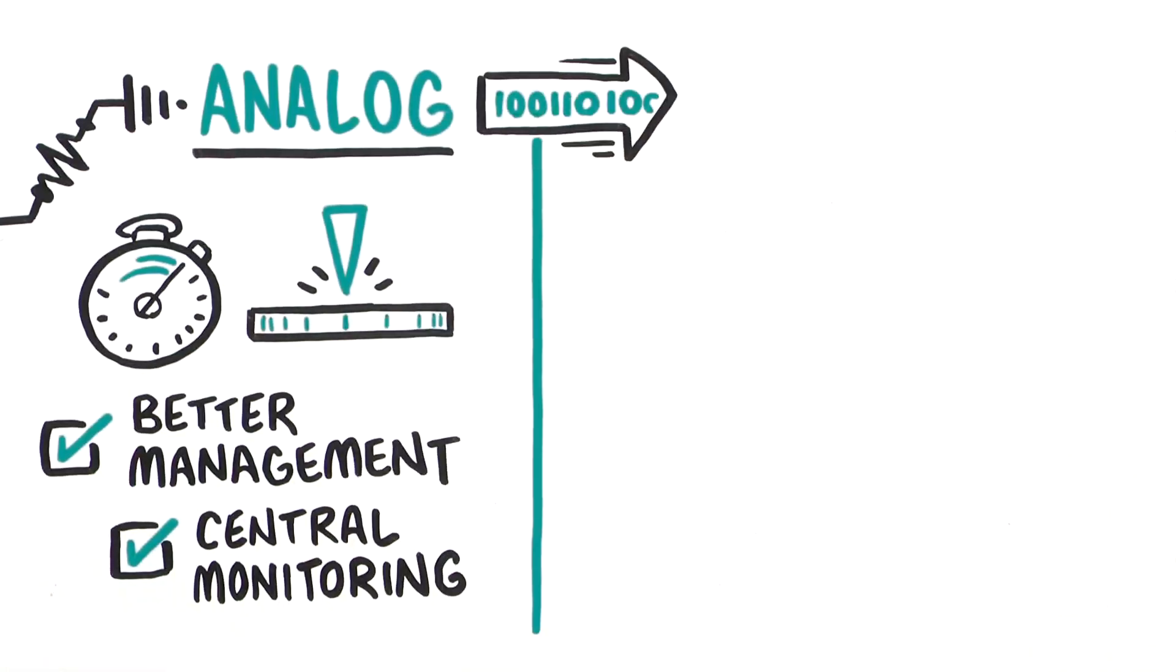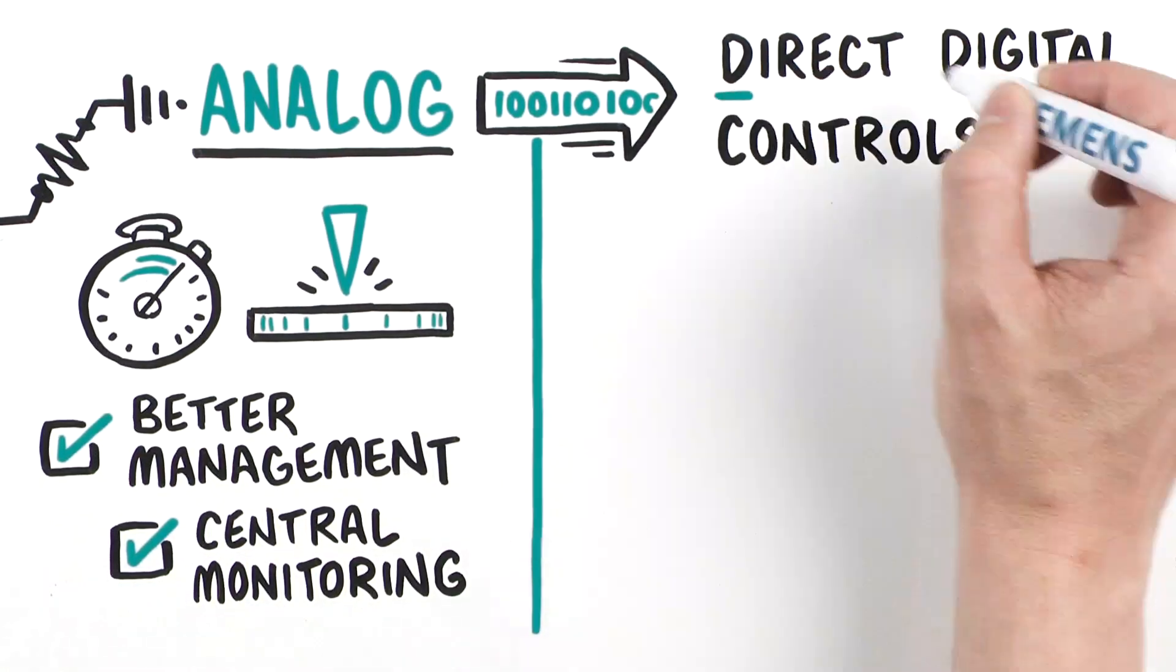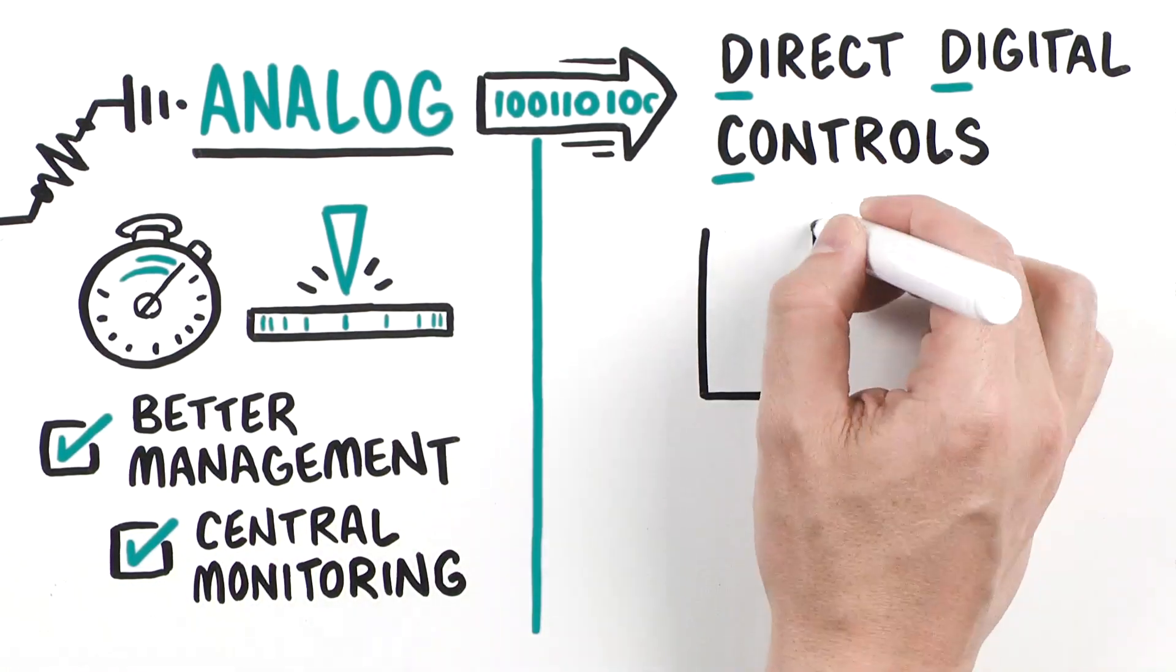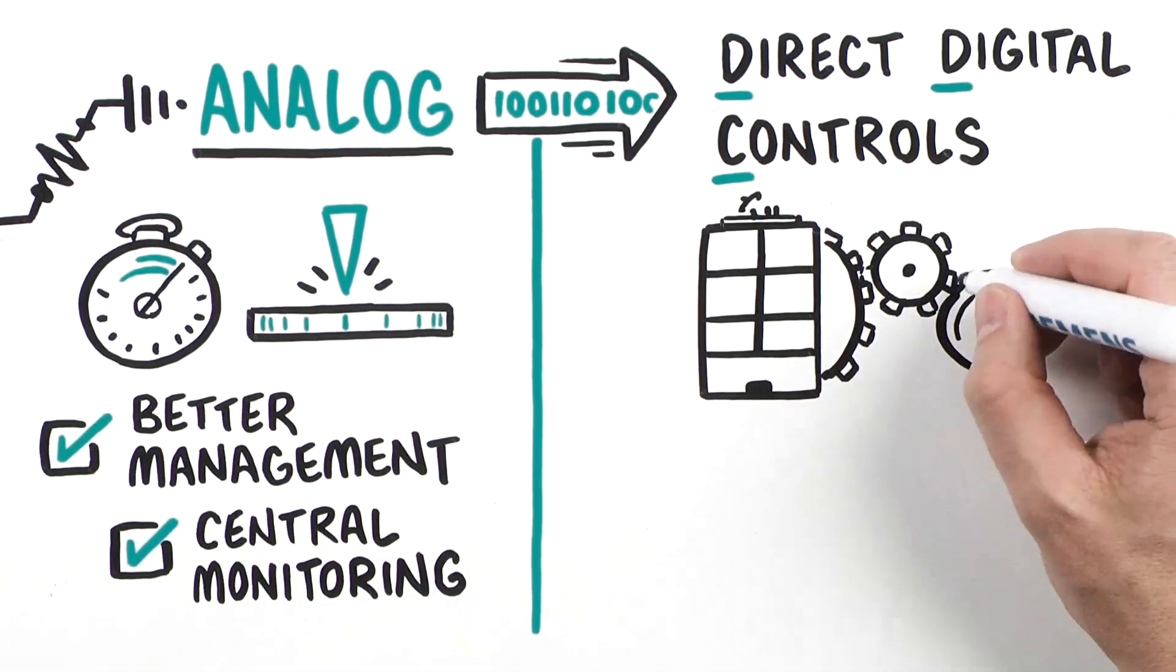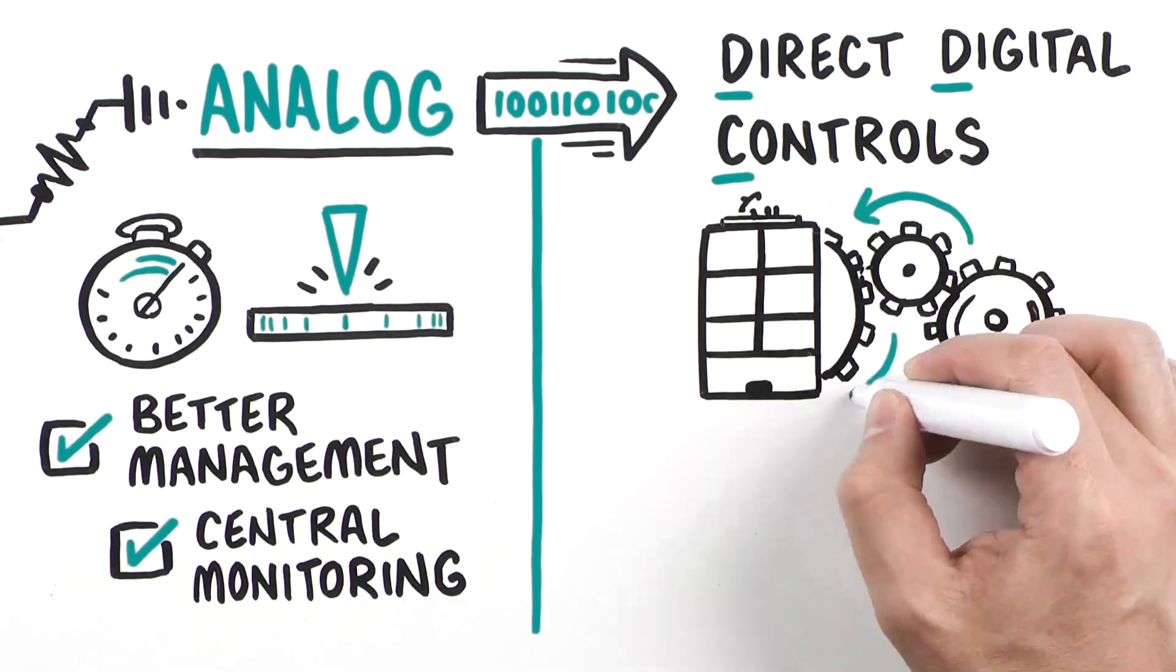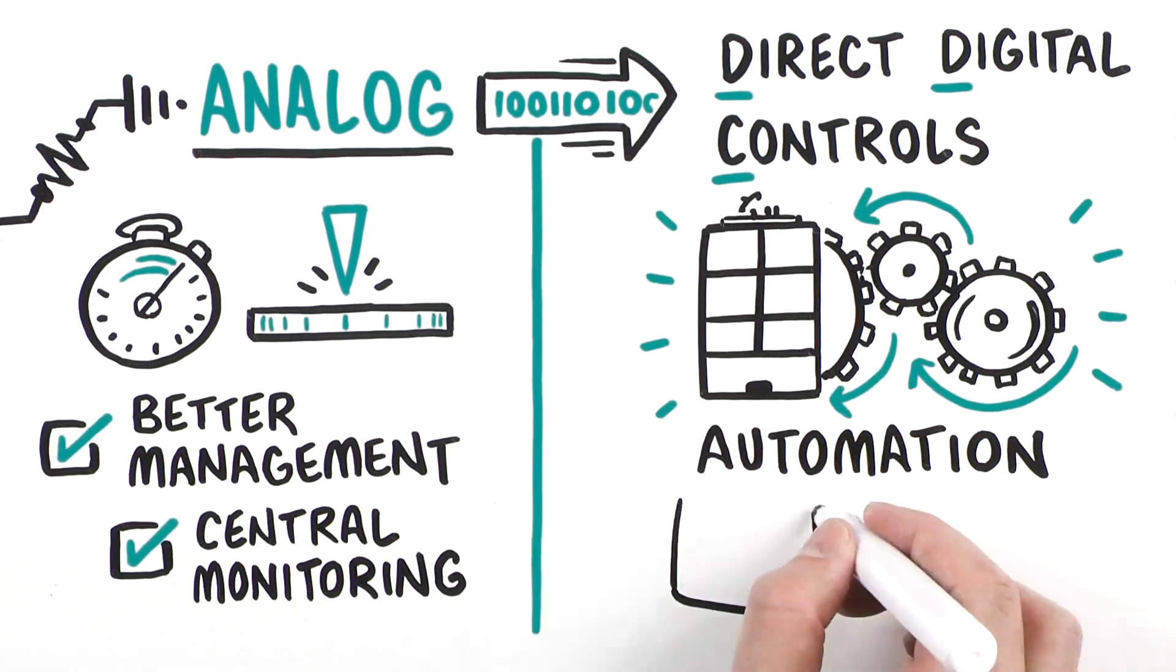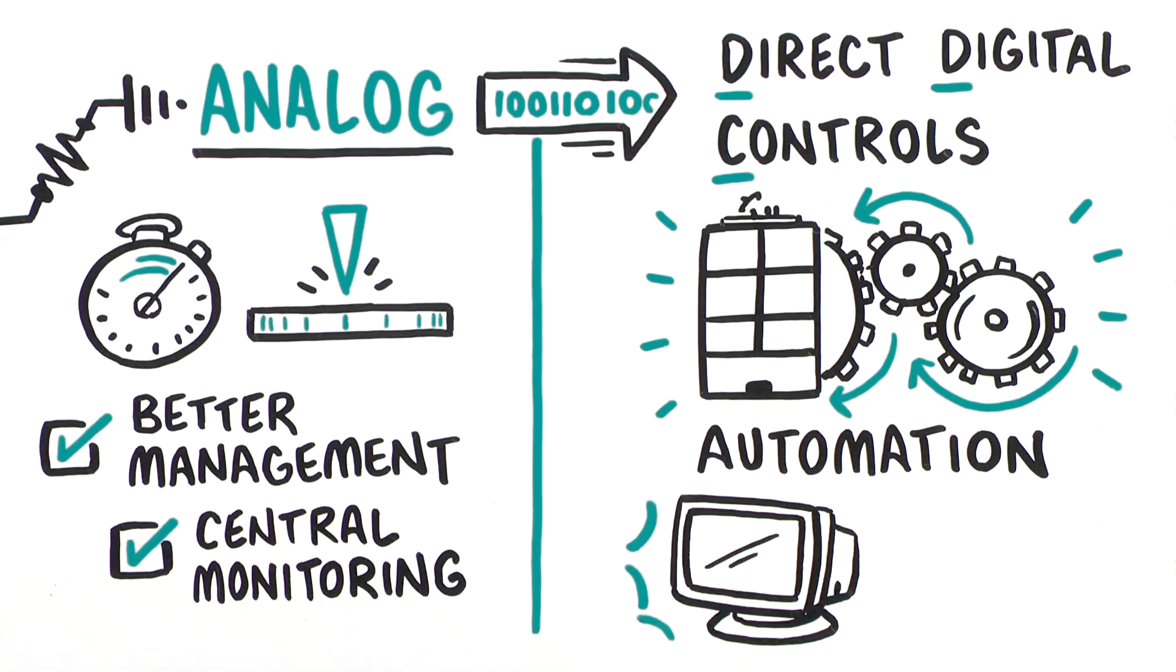The introduction of Direct Digital Controls, or DDC, opened the door to today's building automation systems. With the advent of digital controls came the shift from simple HVAC control to building automation and single-seat navigation. The primary focus was energy optimization.